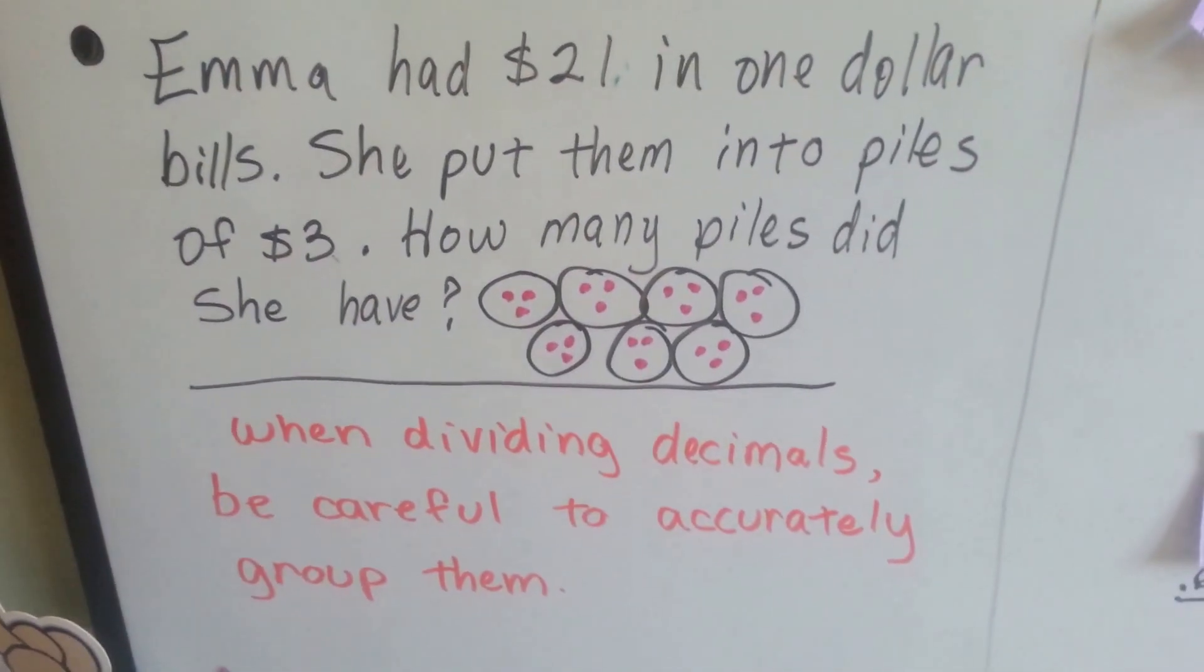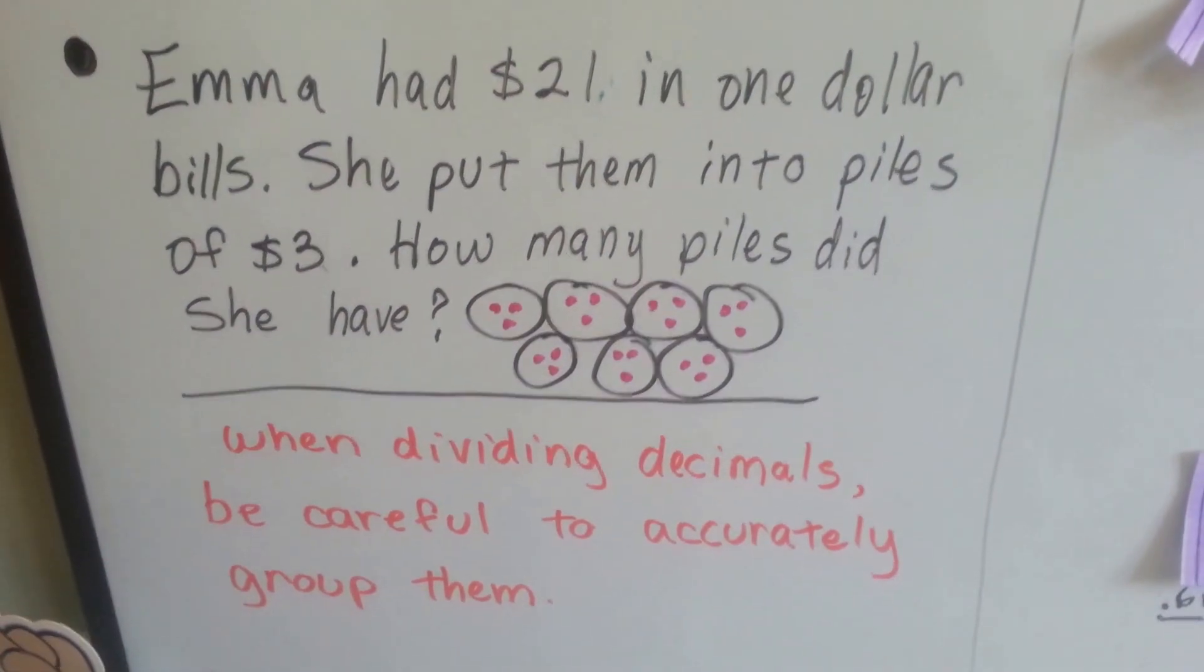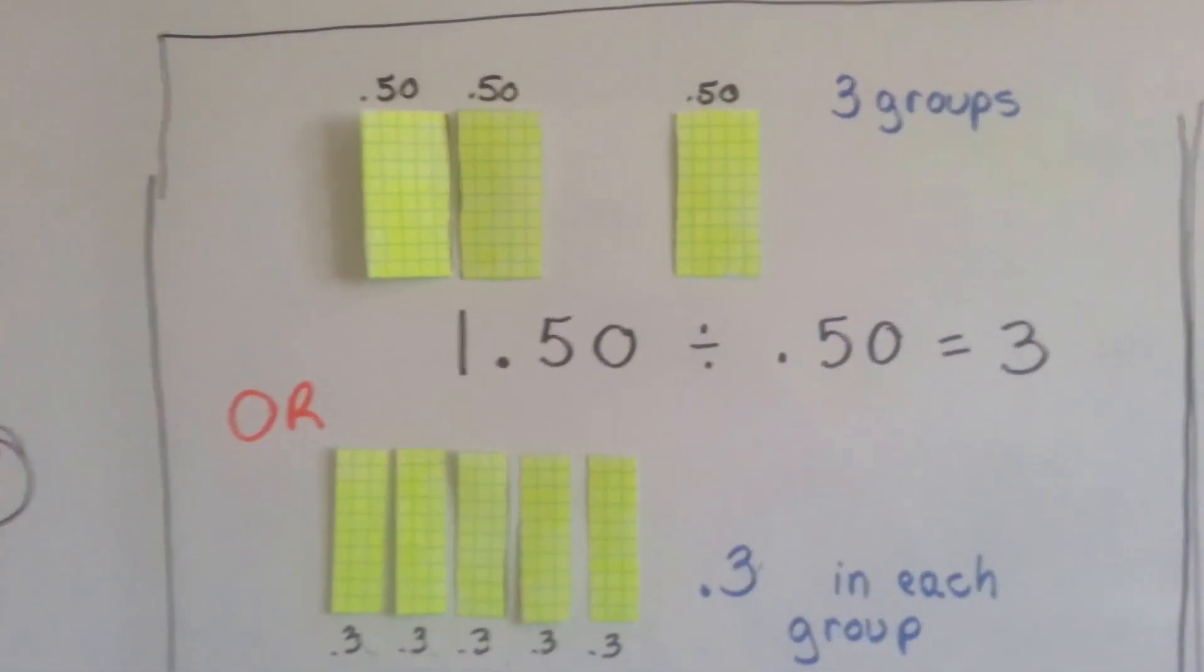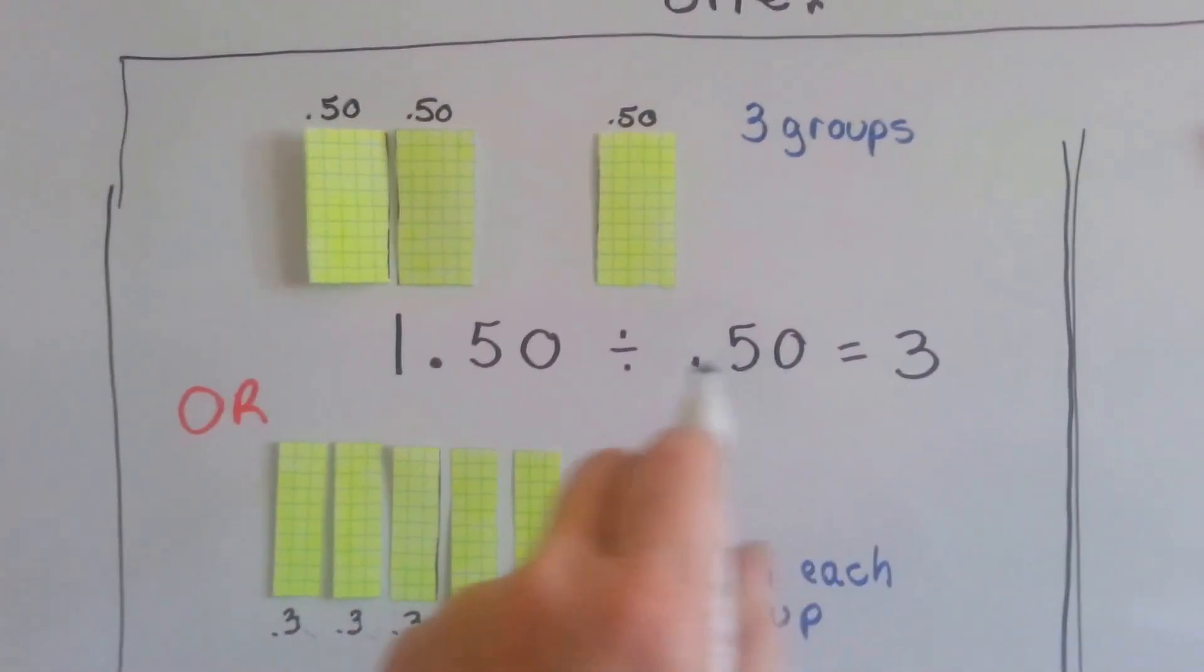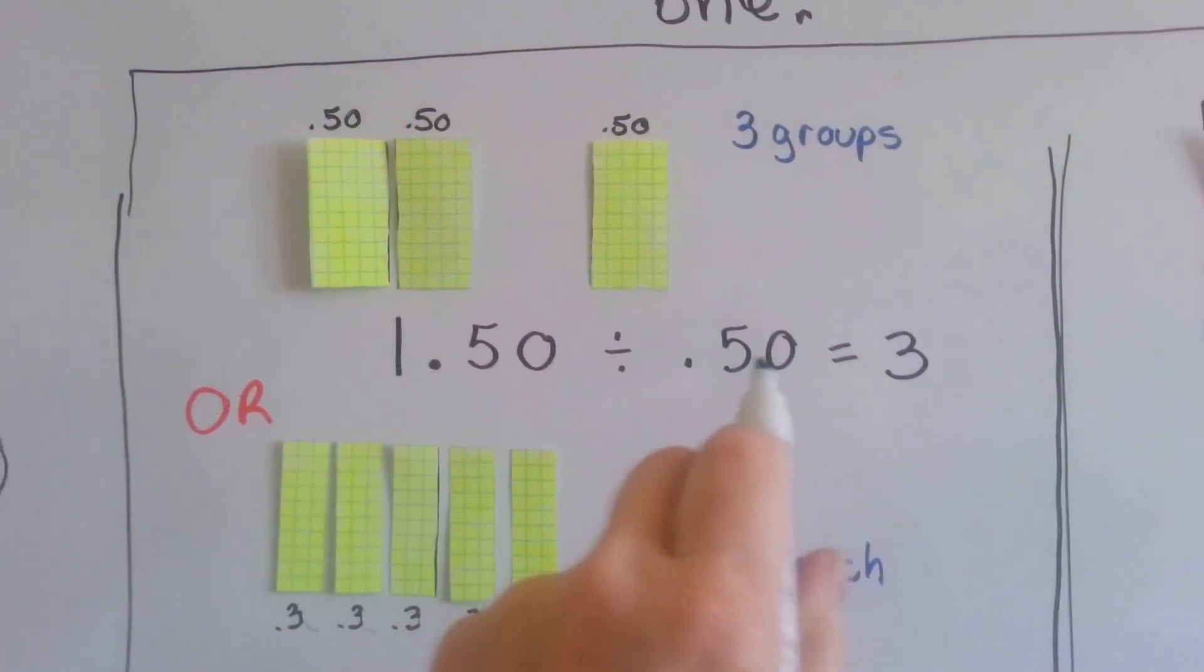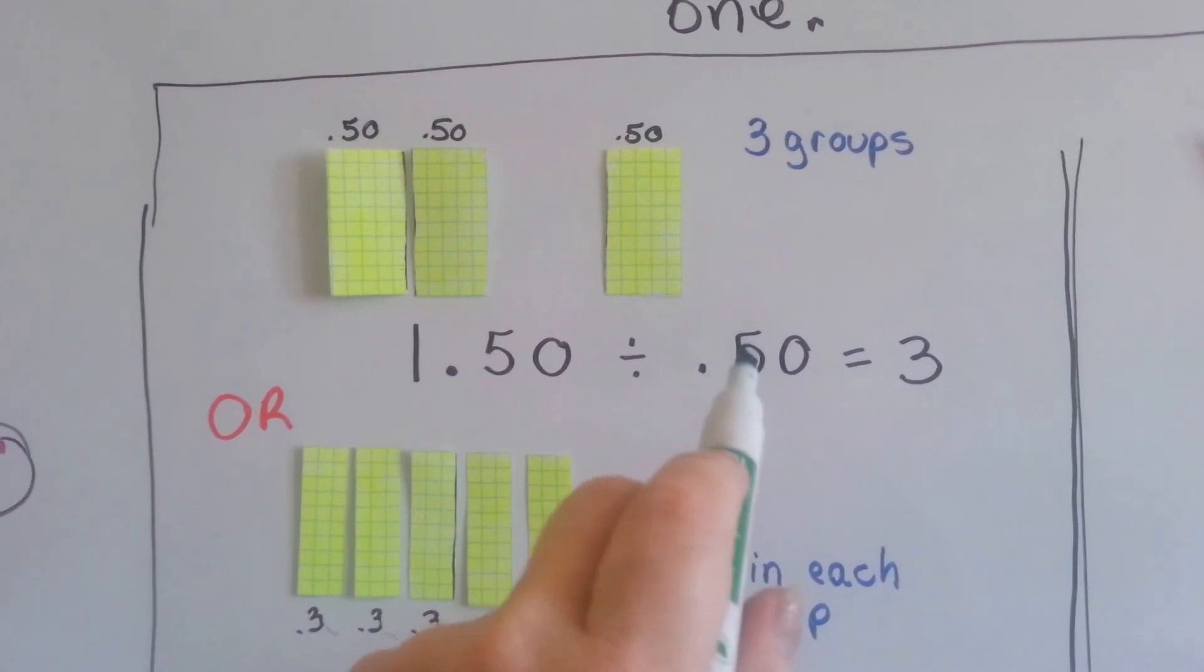So when dividing decimals, be careful to accurately group them. The divisor is going to tell us what to do. In this equation, the 0.50, the 50 hundredths, is our divisor. It tells us what to do.